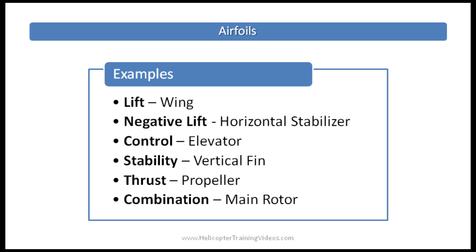Control — a good example of that would be the elevator on an airplane's tailplane. Stability — a good example would be the vertical fin on the back of a helicopter. Thrust — a propeller is an obvious example. And then some airfoils are a combination. An example would be the main rotor of a helicopter, which can produce lift, control, and thrust.